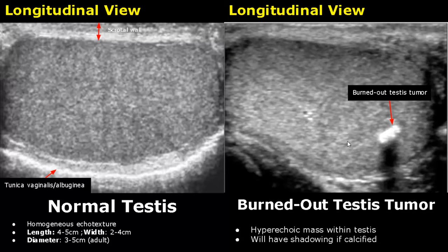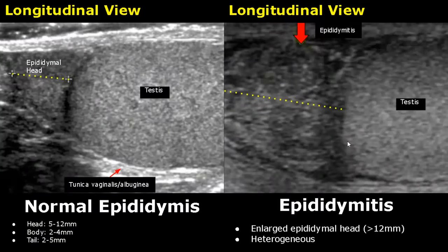The normal epididymis is slightly hyperechoic. The head measures 5 to 12 millimeters, the body measures 2 to 4 millimeters, and the tail measures 2 to 5 millimeters.